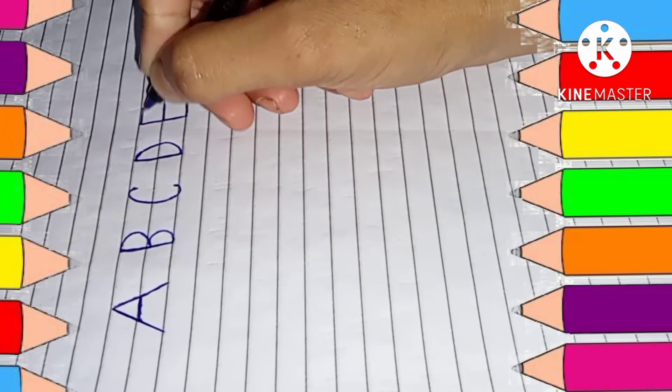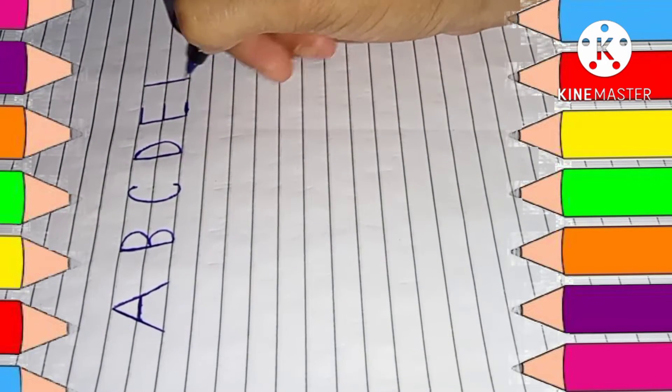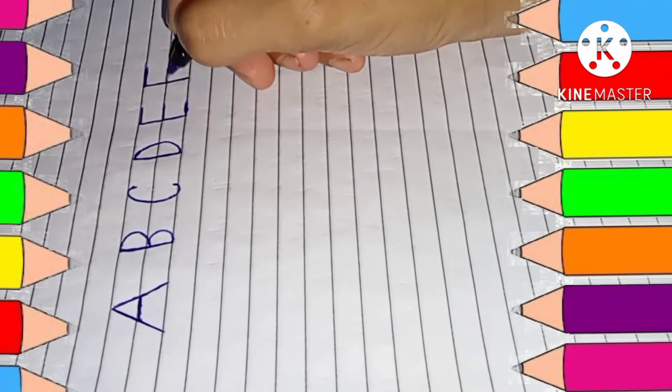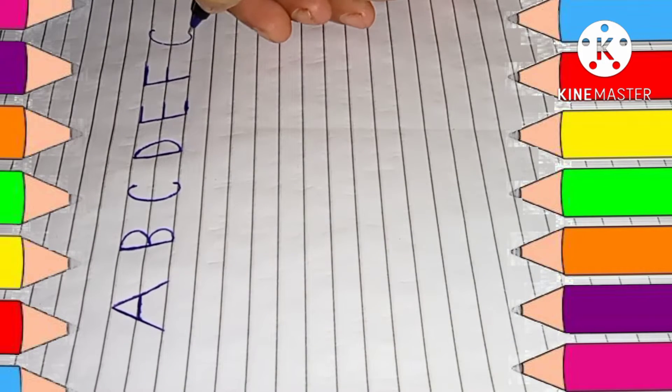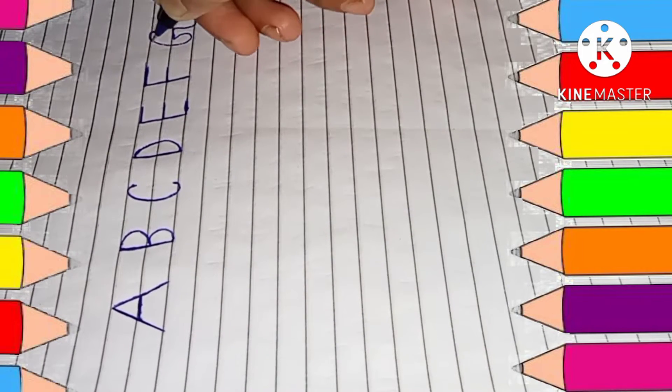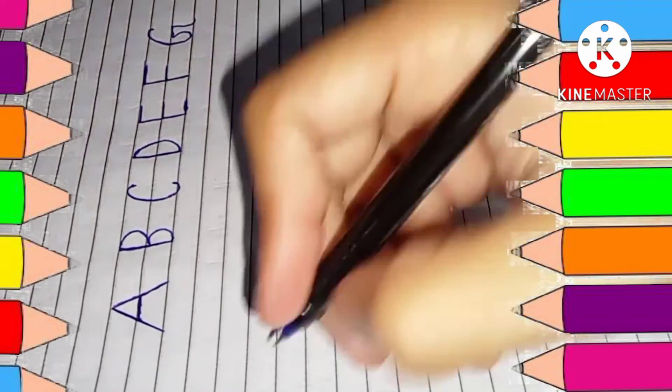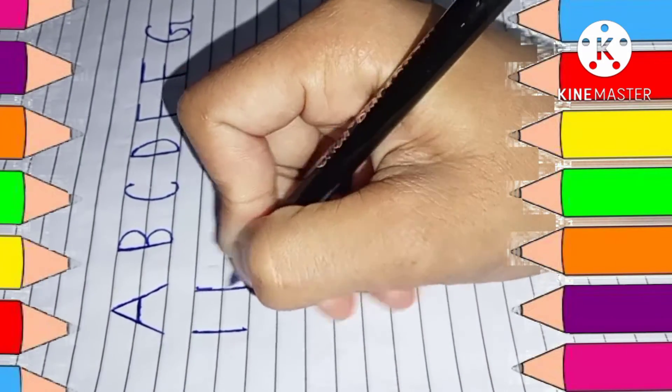E for egg, F for frog, G for girl, H for head.